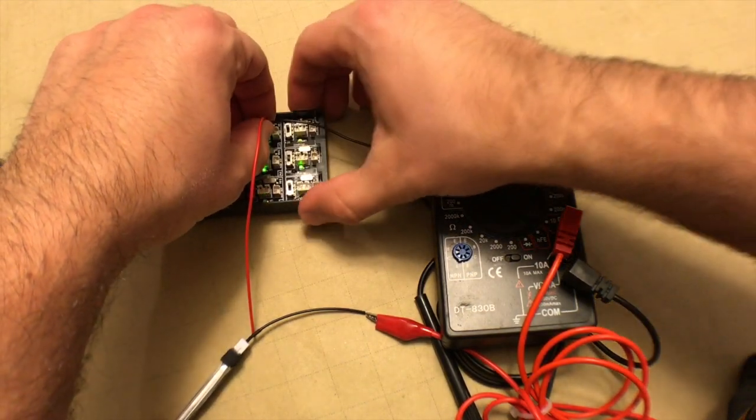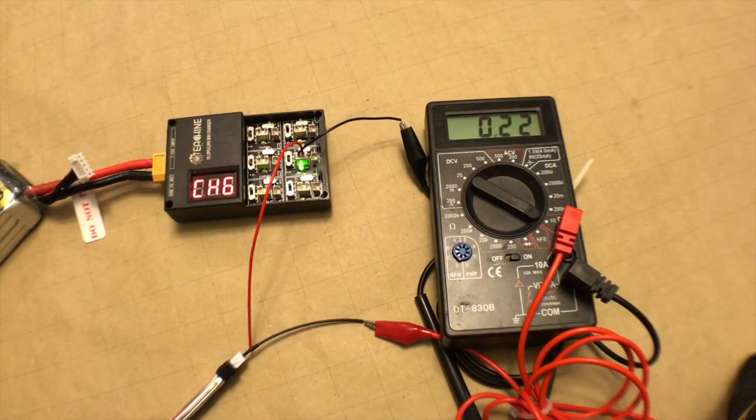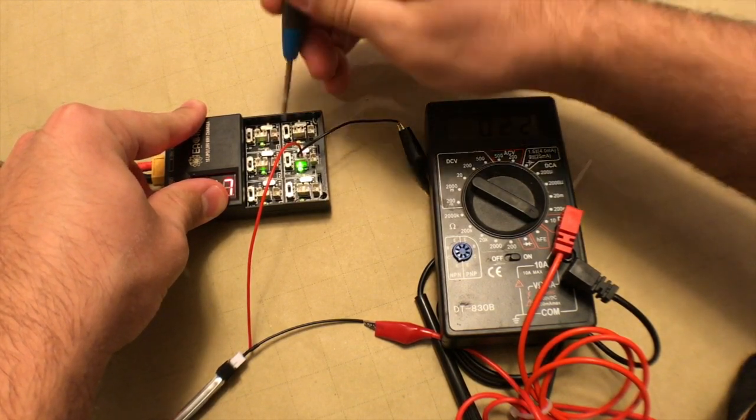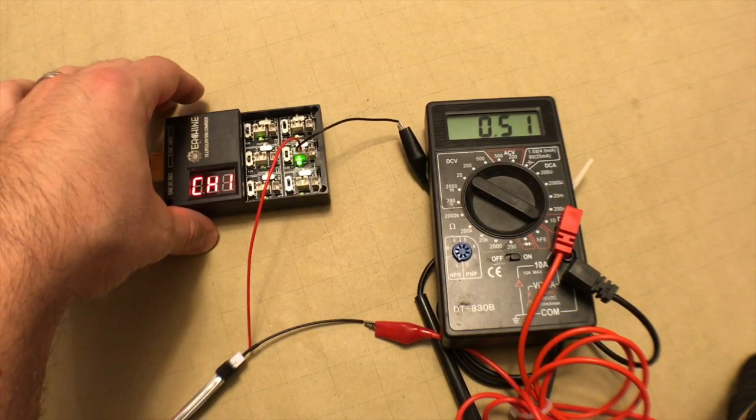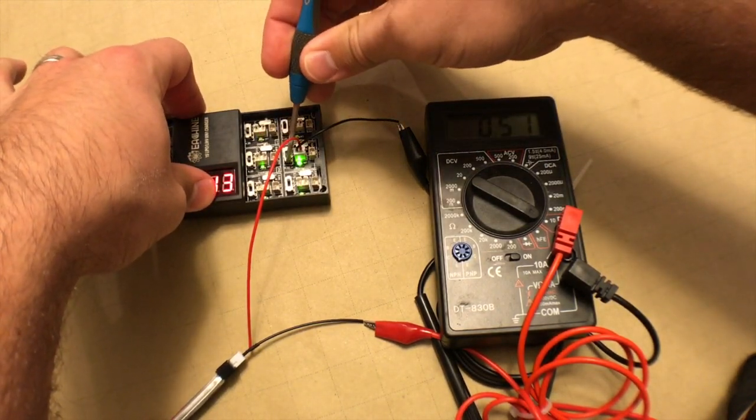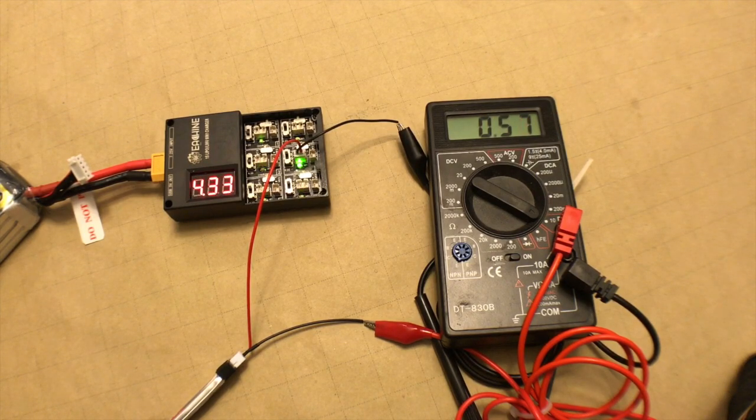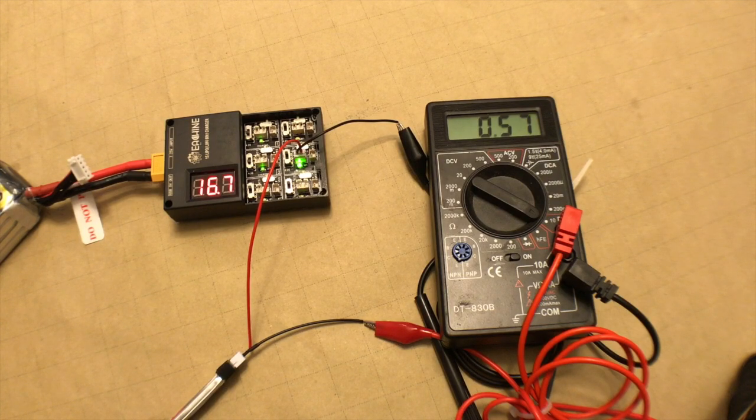We'll go ahead and try a couple of different ports here just to confirm. That one is 0.51 at 4.2 volts, so we'll change that back up to the high voltage setting and it's about the same, 0.56 or 0.57 amps.